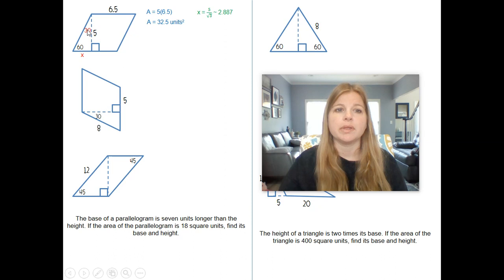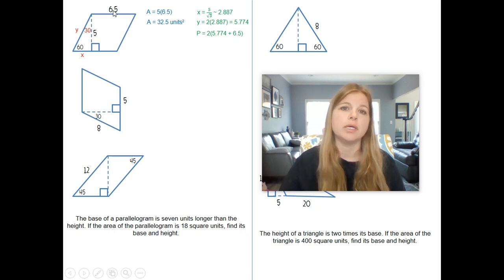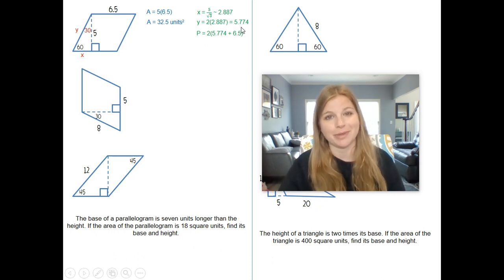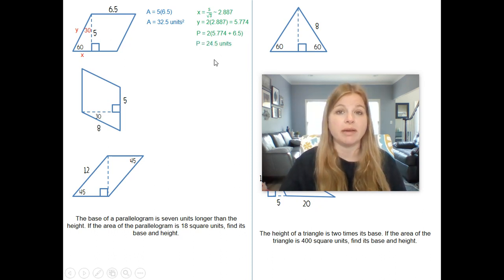And then remember, the side opposite the 30, with relationship to this side of this triangle, which is really the hypotenuse, is we double it. So to find the hypotenuse of this little right triangle here, it would be 2 times that amount, which is 5.774. Now I know the length of this side. I know the base. I simply do 2 times the sum of those values. Or again, I could really just write 6.5 plus 6.5, 5.774 plus 5.774. And rounding to the tenth place for my final answer, I get 24.5.